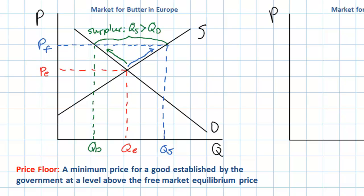We'll start with consumers. Let's assume that before the price floor, consumer surplus was the area below the demand curve and above the equilibrium price of PE. At a higher price and a lower quantity, consumer surplus shrinks to a much smaller area. Consumers are enjoying a lower quantity of butter but paying a higher price for it. The actual quantity demanded for butter is only QD now, whereas before the price floor it was QE. There will be less butter consumed in Europe due to the price floor.